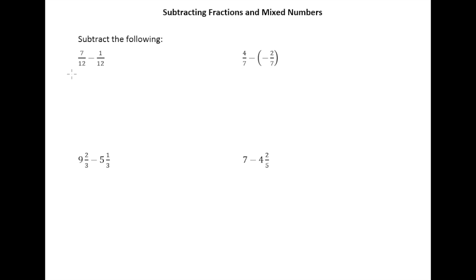So you can see in 7/12 minus 1/12, 7 minus 1 is 6, put that over 12. But of course you recognize that 6 and 12 have a greatest common factor of 6. We can divide both the top and the bottom by 6, so our answer here is 1/2.